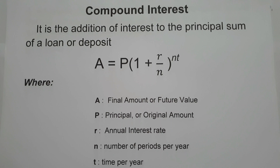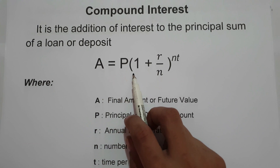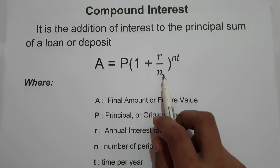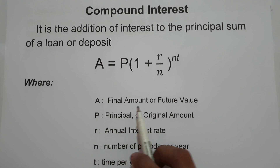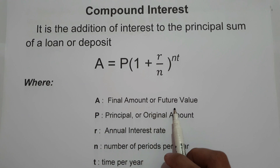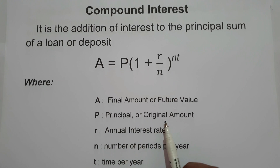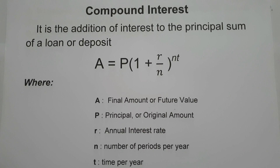The formula for compound interest is A equals P times 1 plus R over N raised to NT, where A is the final amount or future value, P is the principal or original amount, R is the annual interest rate, N is the number of periods per year, and T is the time in years.